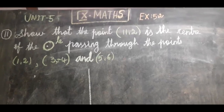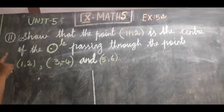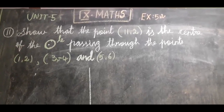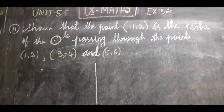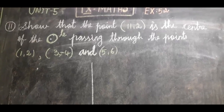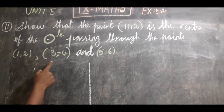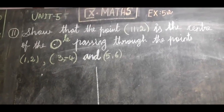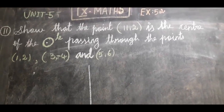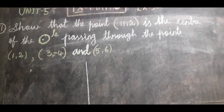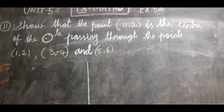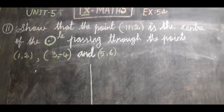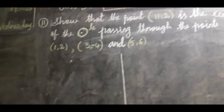Unit 5, exercise 5.2, question number 11. We have to show that the point (11, 2) is the center of the circle passing through the points (1, 2), (3, -4), and (5, 6). We have to prove that (11, 2) is the center of the circle passing through these 3 points.